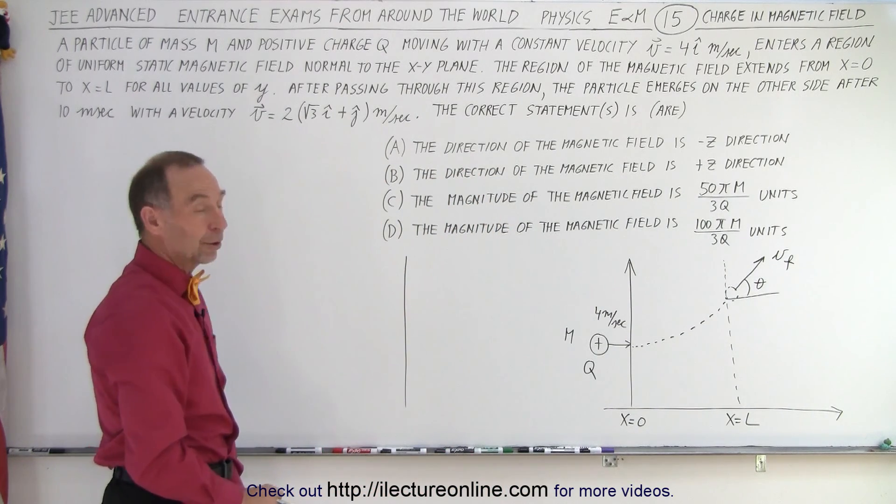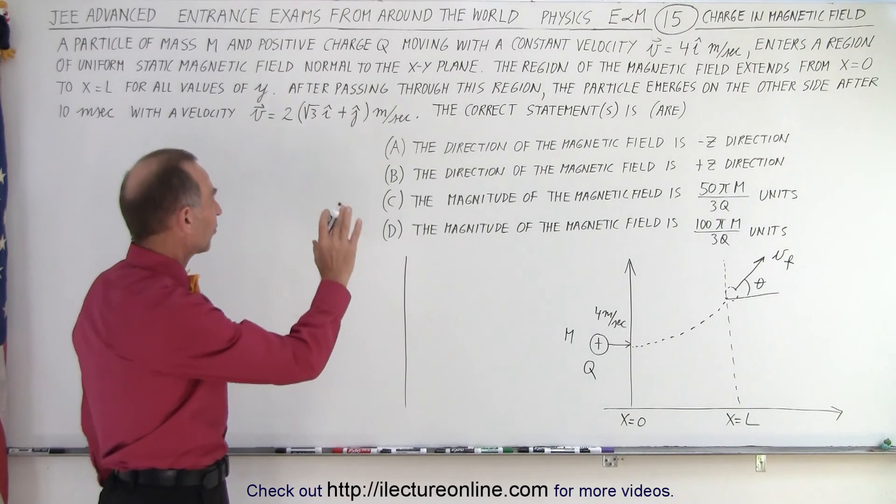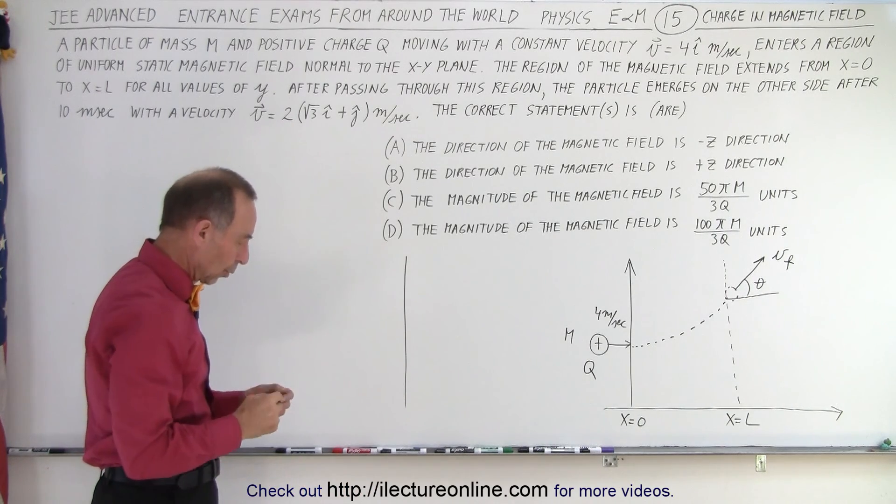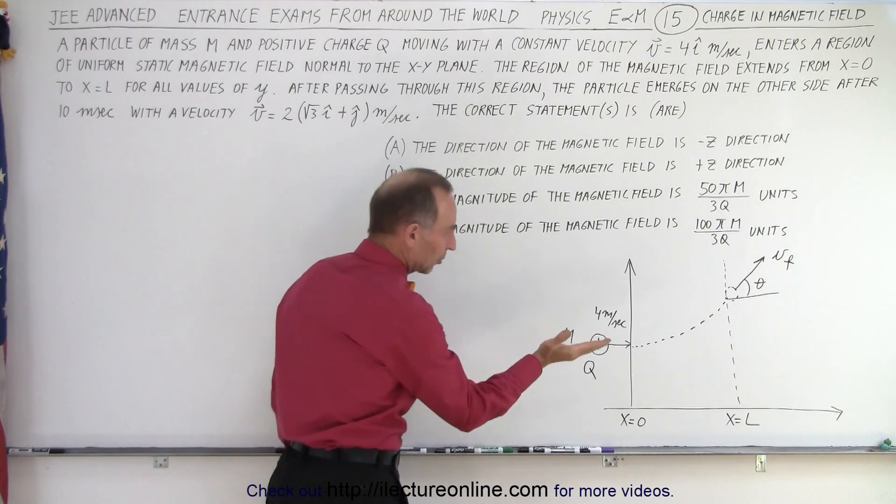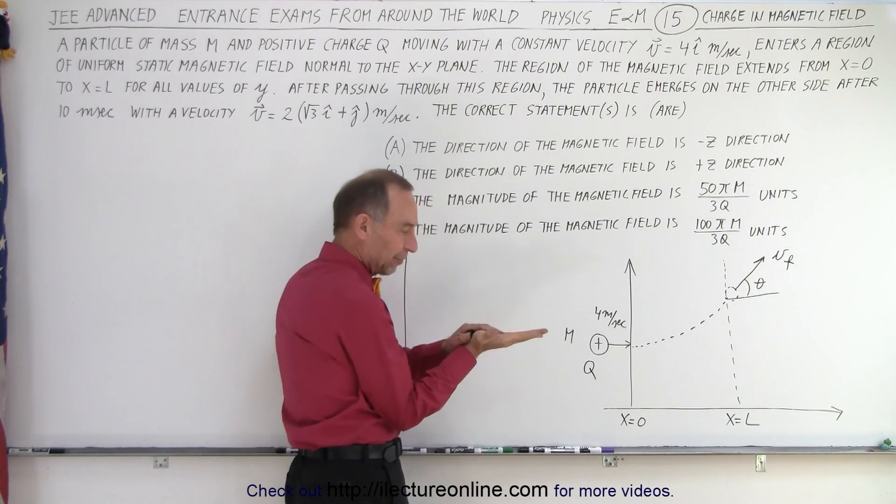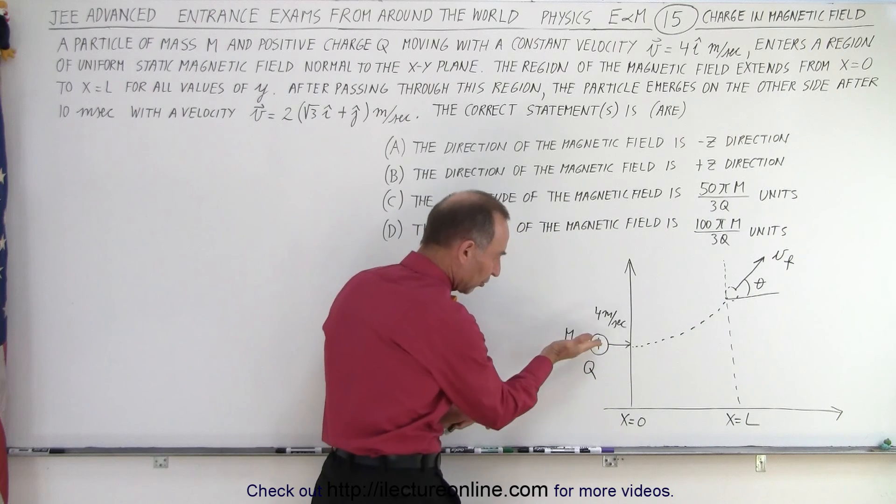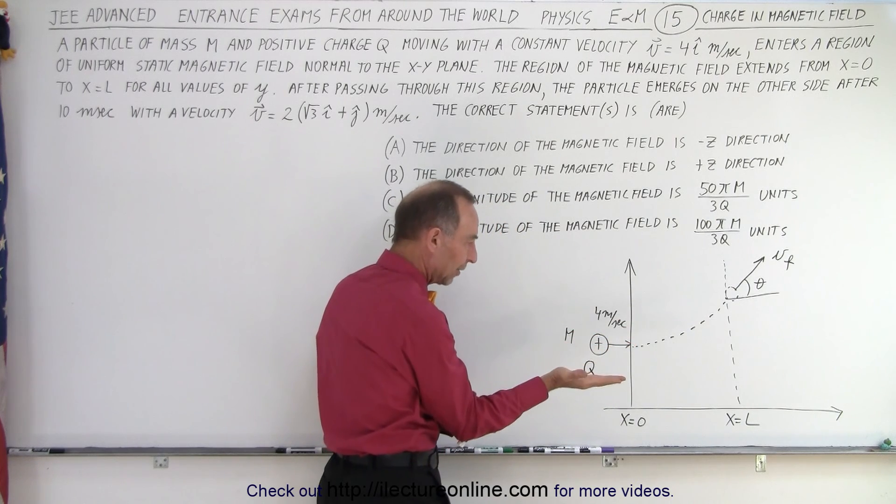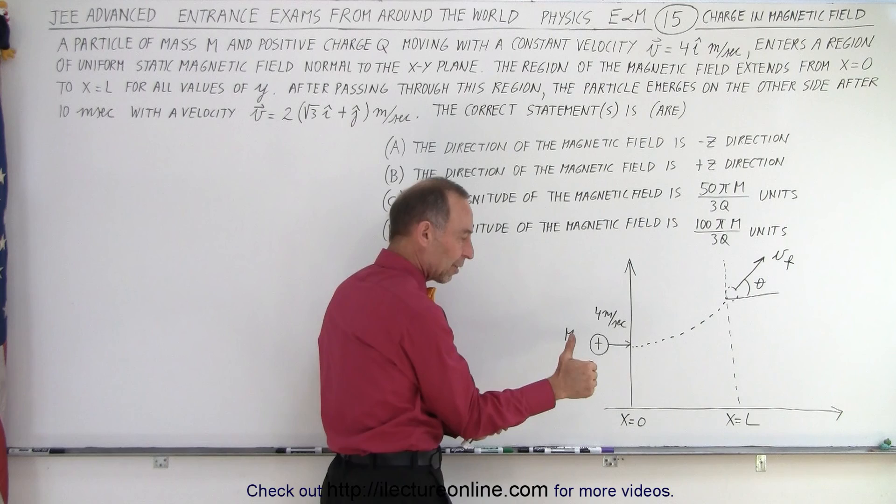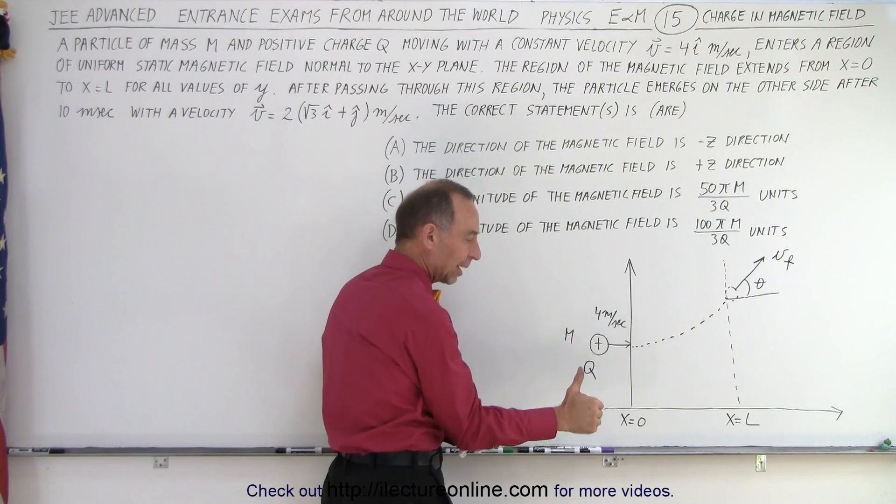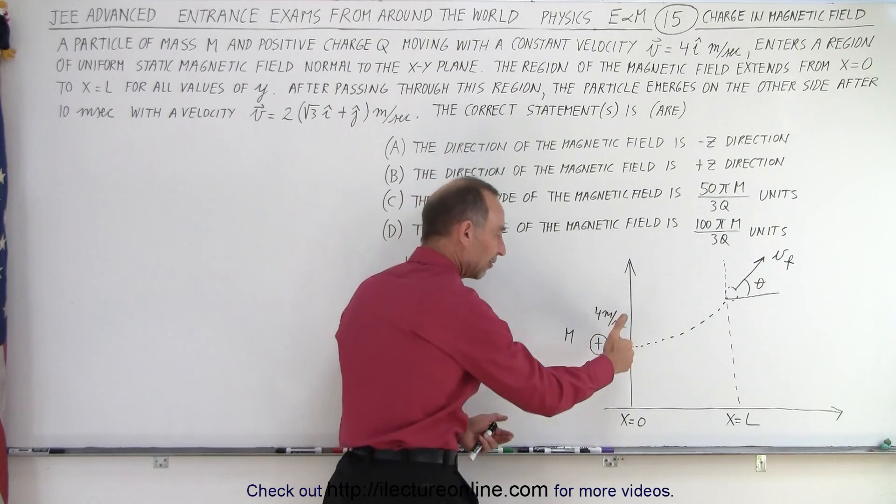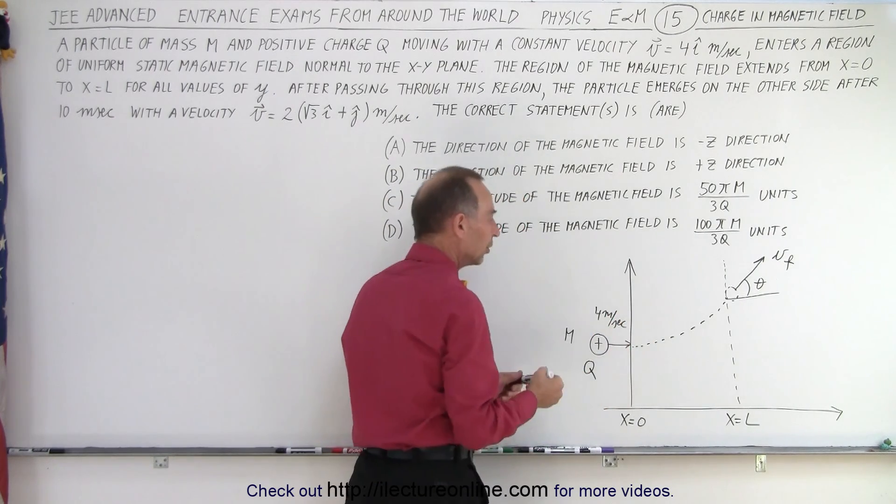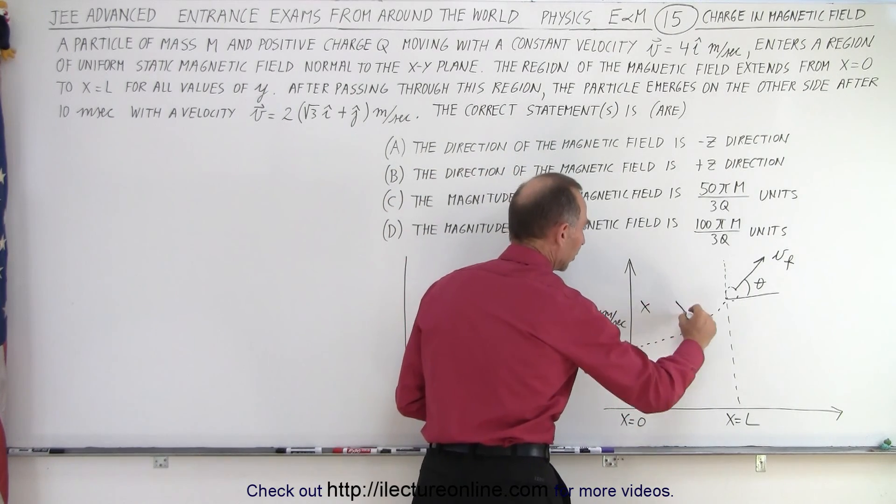Wow, how do you do this? Well first of all let's try to answer A or B. Notice that the particle is moving in this direction. If we take our fingers and move in the direction of motion, it's a positive particle so I use my right hand, and then I curl my fingers in the direction of the magnetic field. Then my thumb will point in the direction of the force. It looks like the force is up, that means the magnetic field must be into the board.